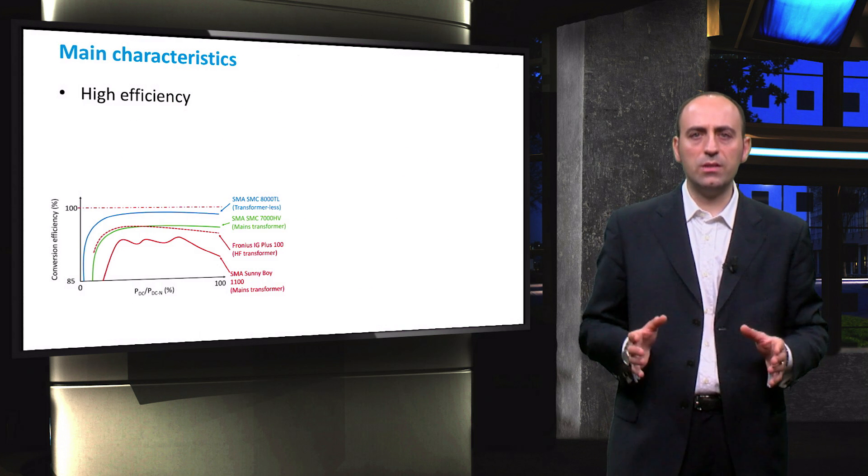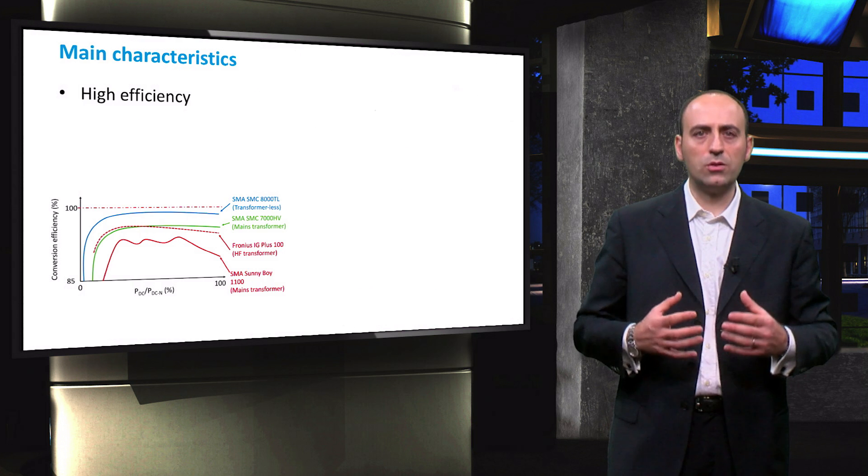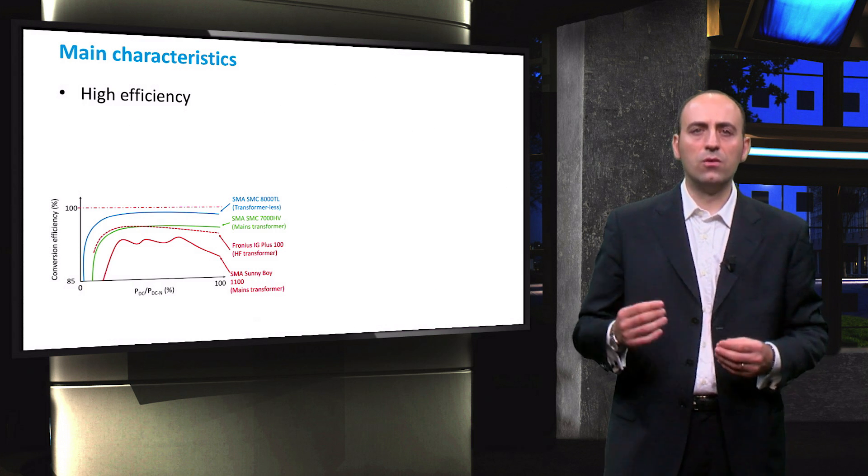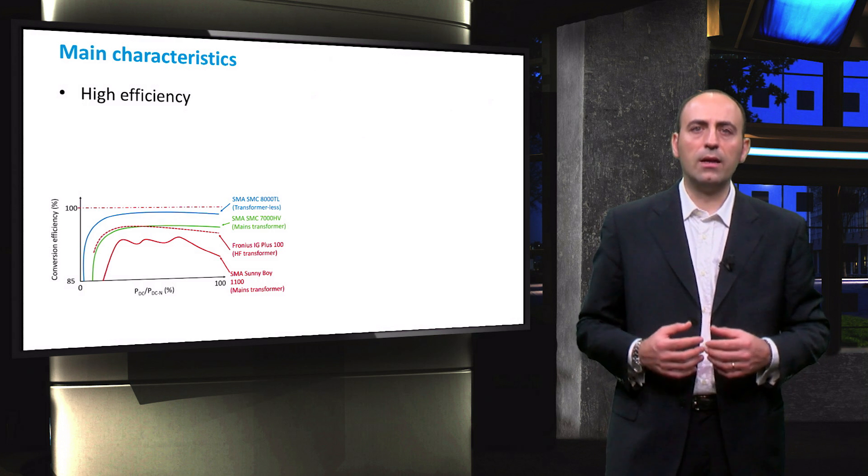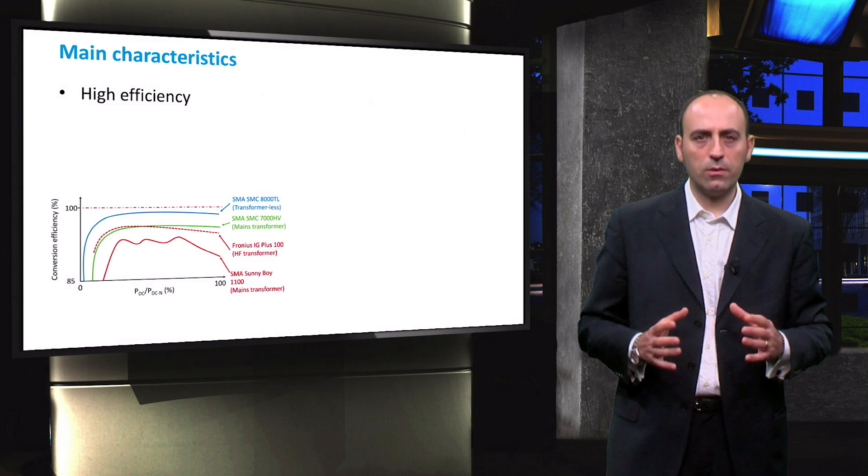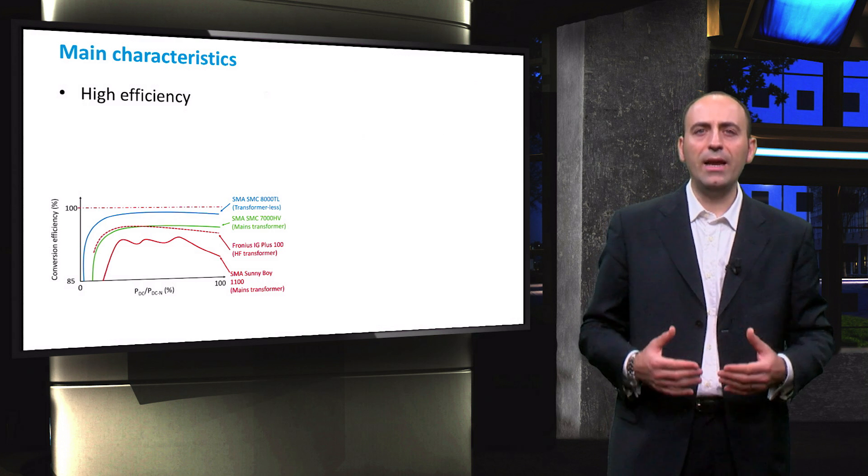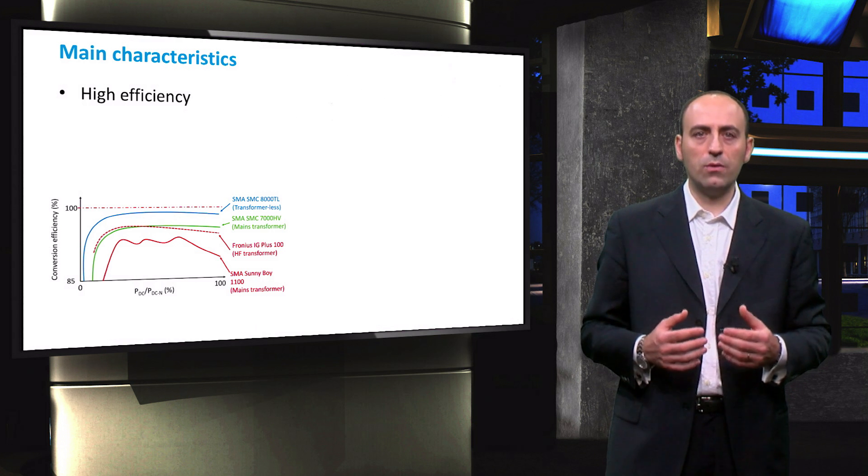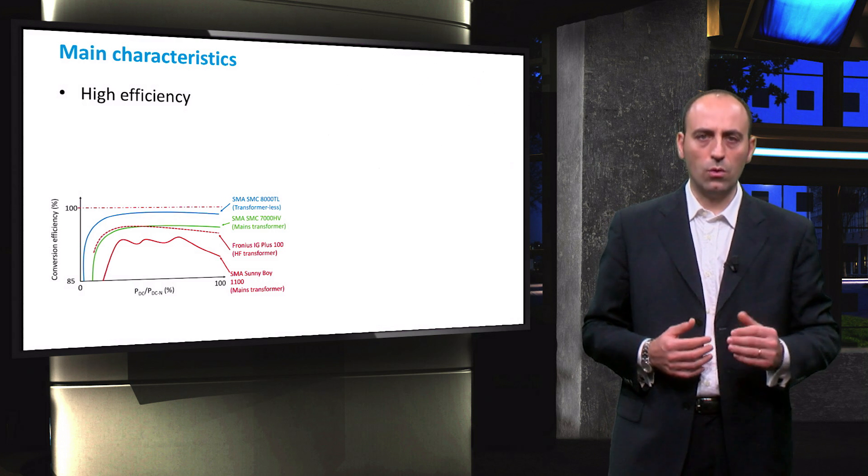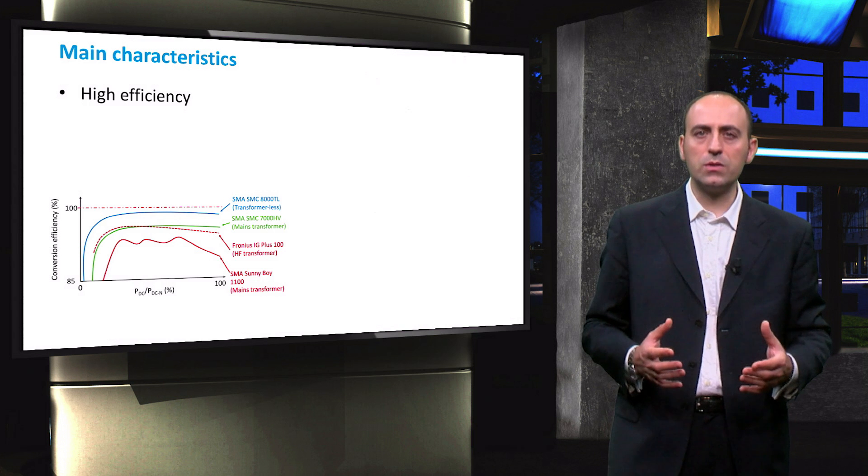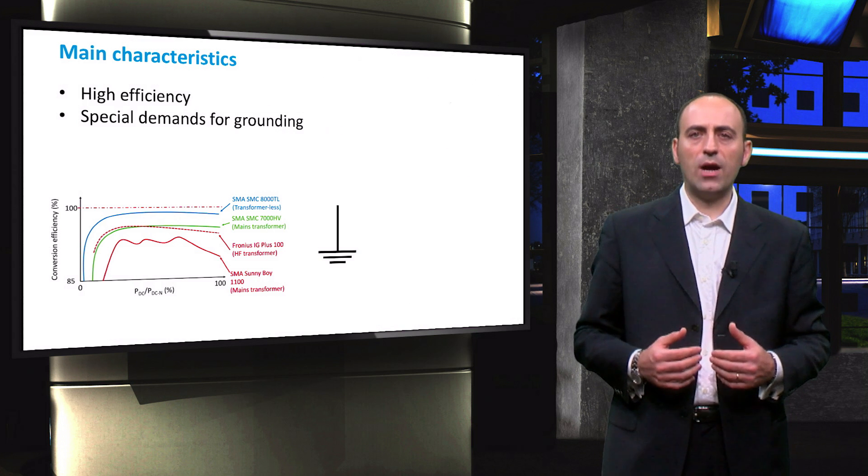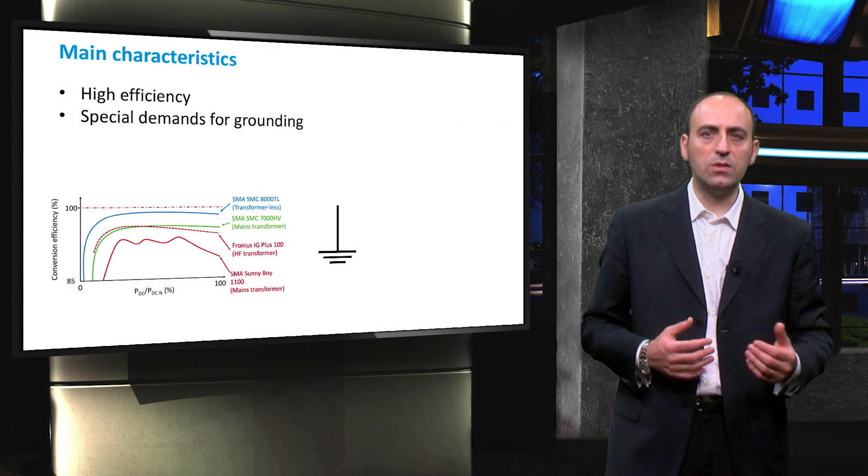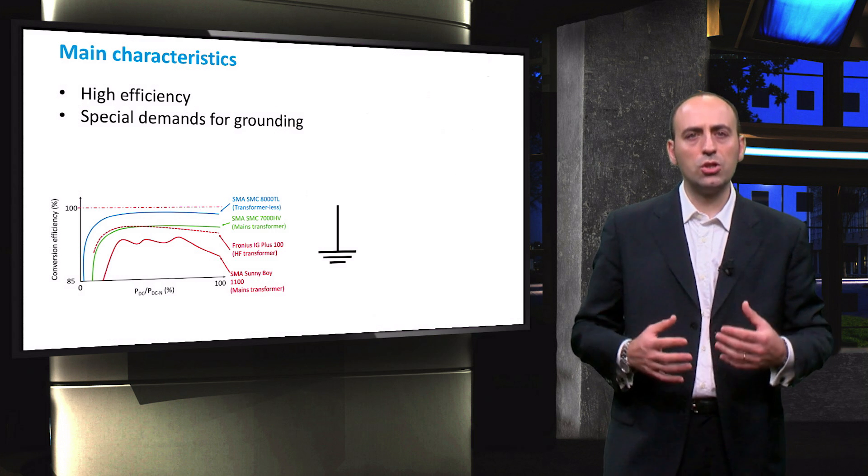Let's now see the main characteristics of a solar inverter, intended as the power electronic device that actually performs the conversion from direct current to alternate current. In general, an ideal solar inverter should fulfill the following requirements. First, it should be highly efficient because the owner of the solar system requires the absolute maximum possible generated energy to be delivered to the grid or to the load. To meet this goal, we seek for solutions that can ensure low losses. Sometimes, special demands about grounding need to be met. We will come back to this aspect at the end of this series of video, when we will talk about potential induced degradation.